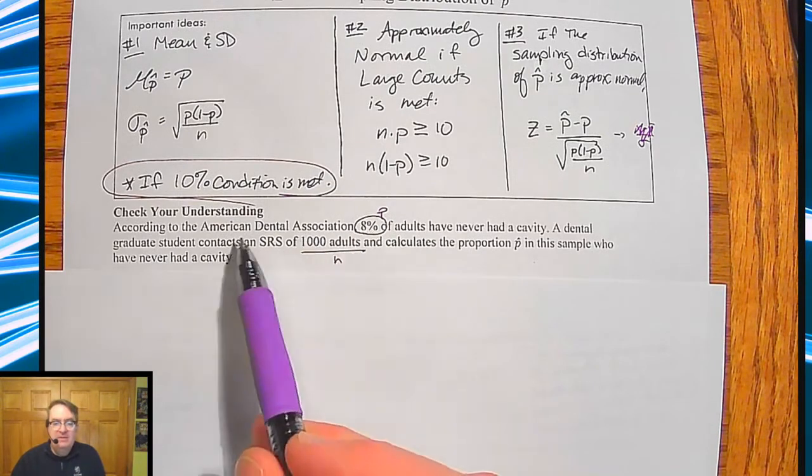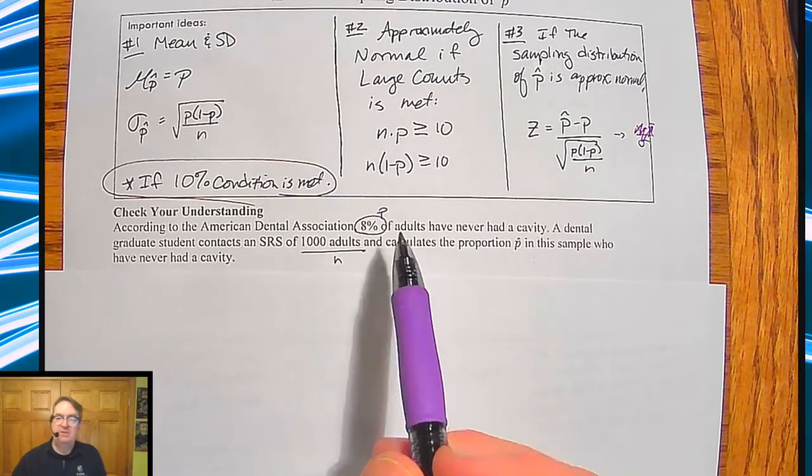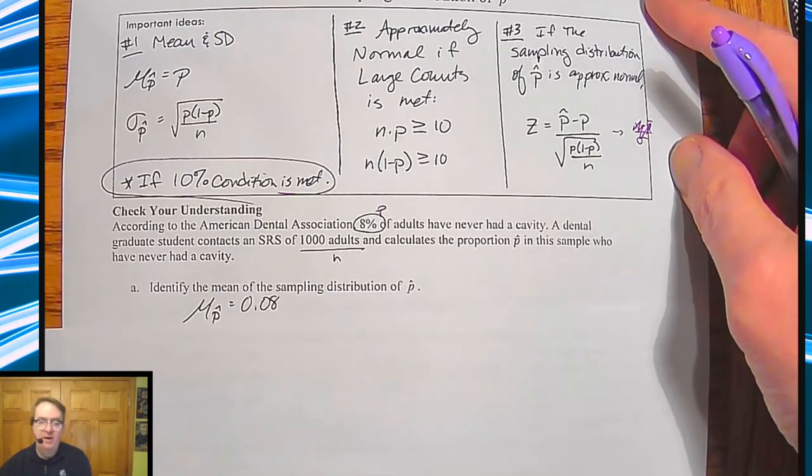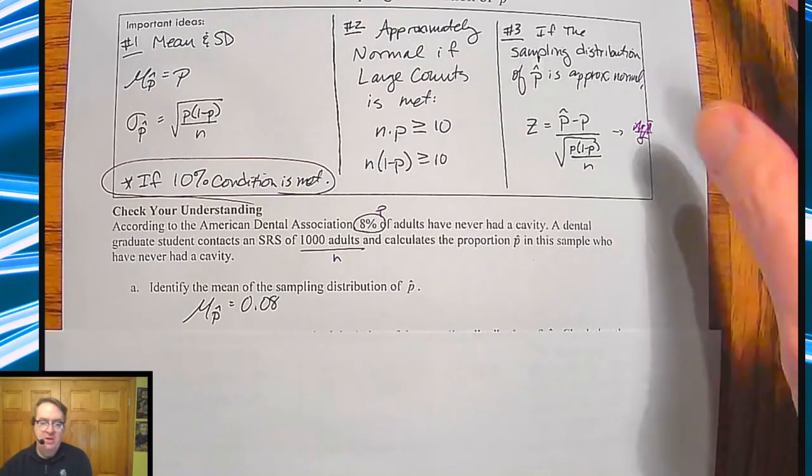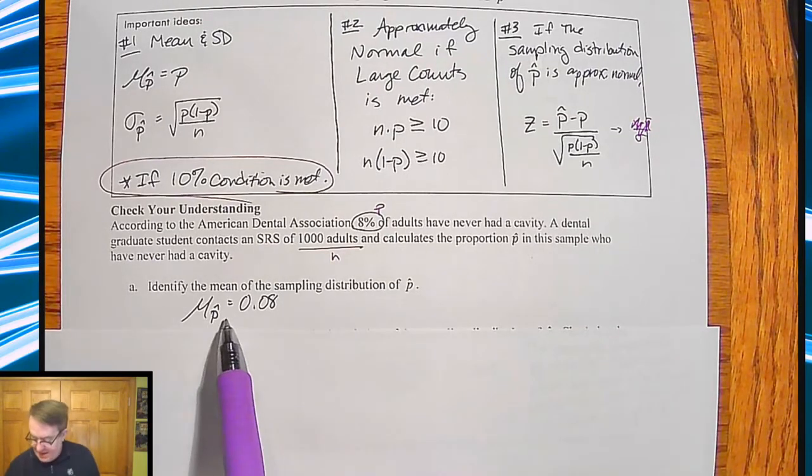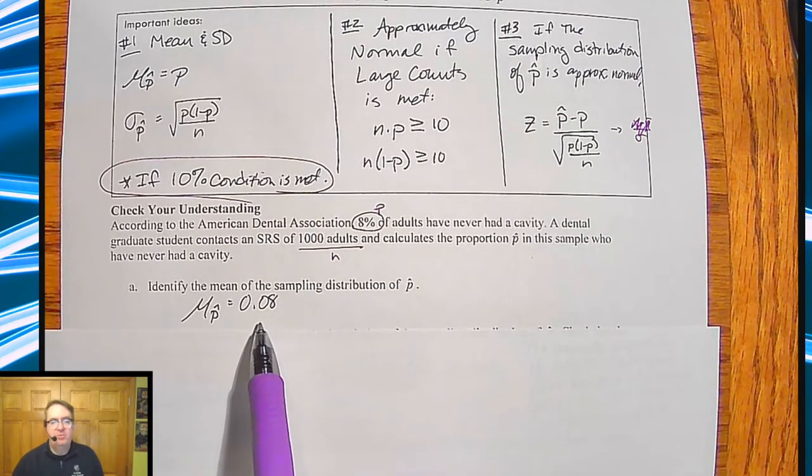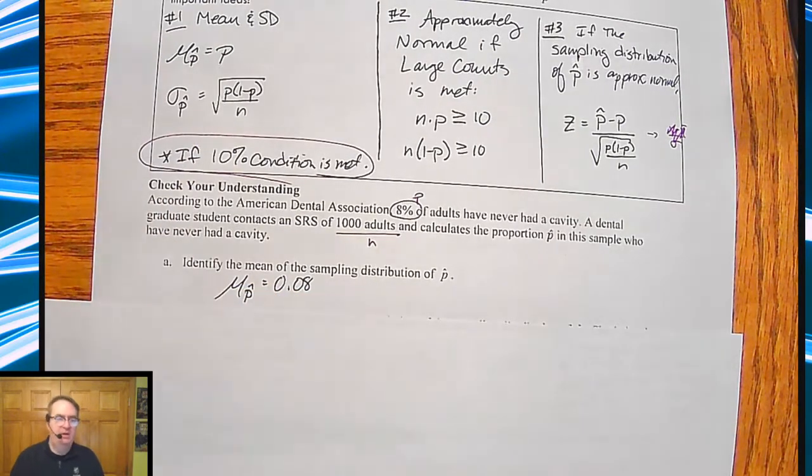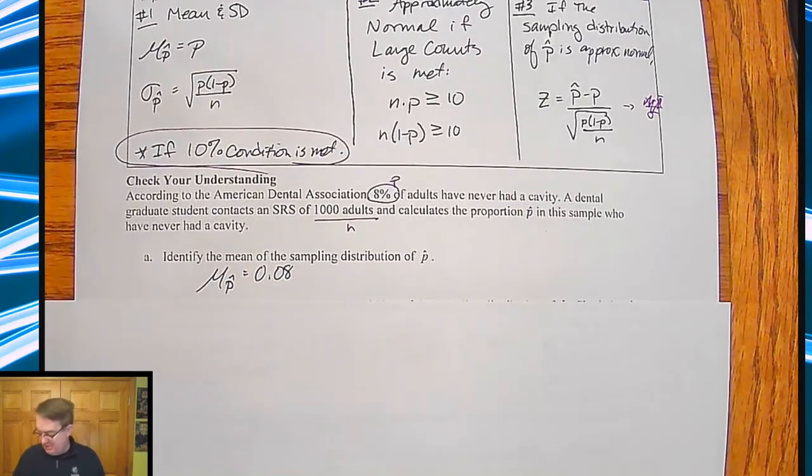So according to this, since the American Dental Association said 8% have never had a cavity, we're going to assume that that works for all adults. That's p, that's for the population. And then this dental student is comparing what they're finding to what they're seeing. So here your mean of p hat is going to be 8% or 0.08. Again, that ties back up to what's over here. As I said, it's the simplest thing ever.